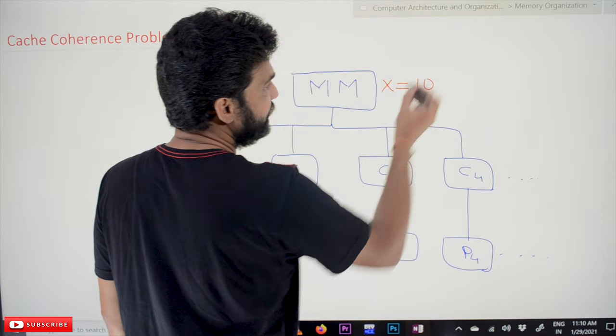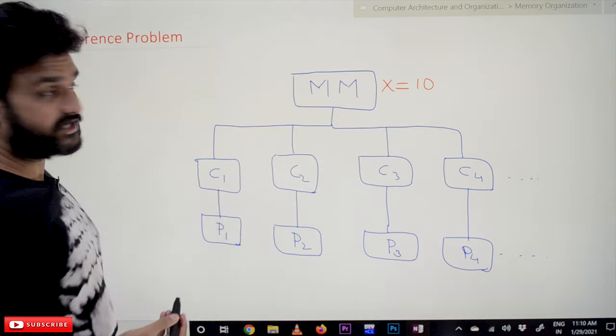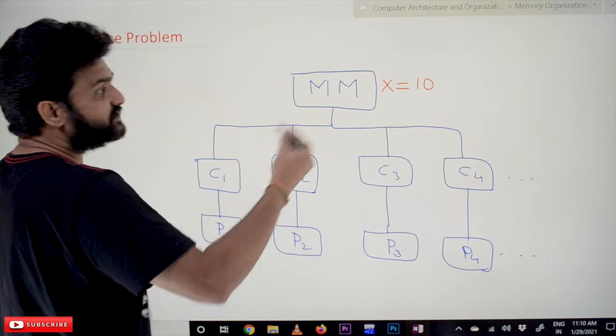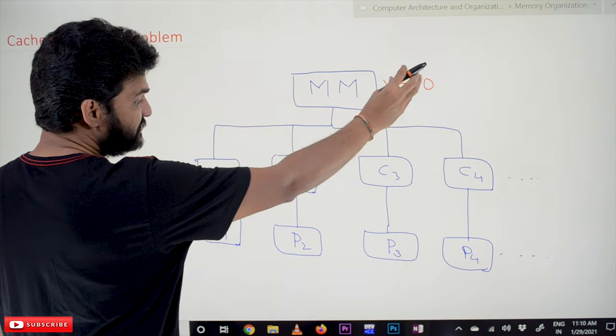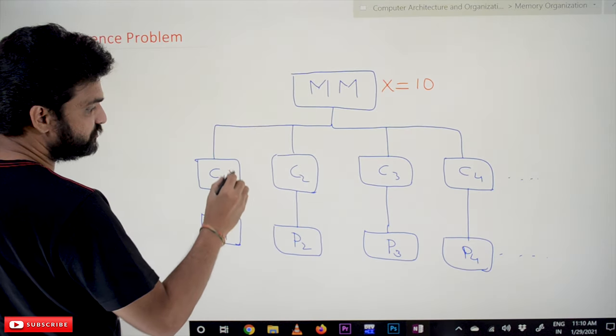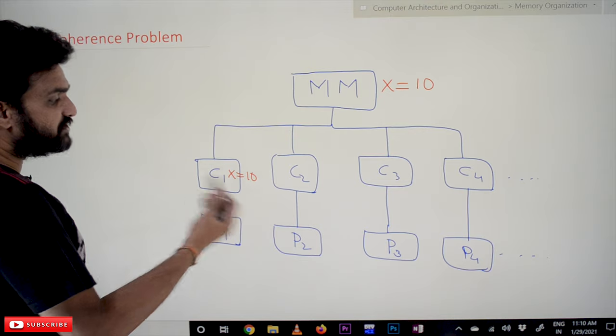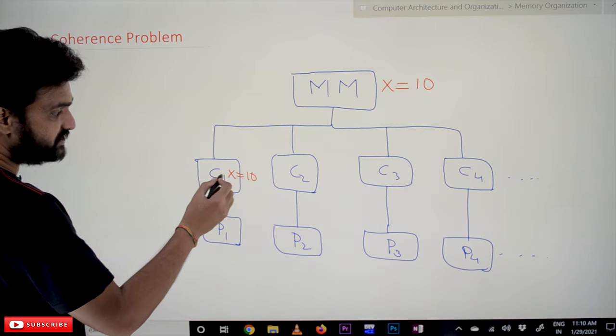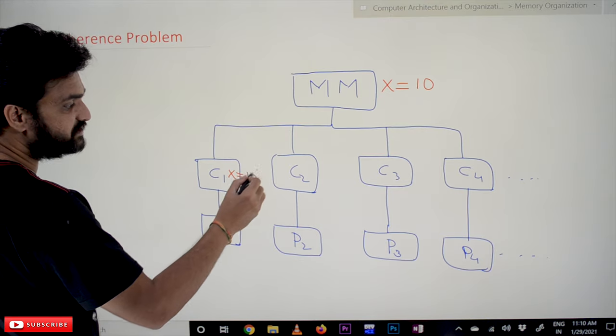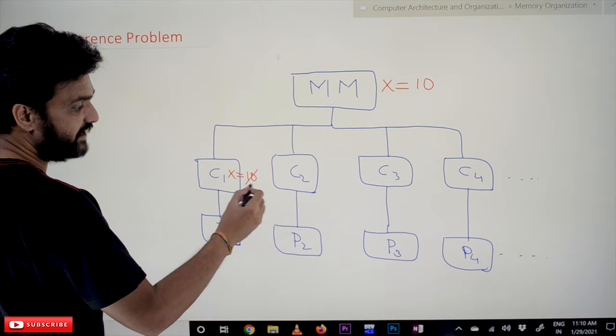At some point of time, this variable X is accessed by C1. So C1 has accessed this value 10, and in the process of executing that program, it made changes on this variable X and it has been changed.